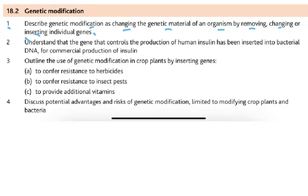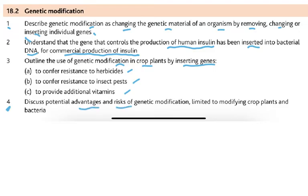Number two: understand that the gene that controls the production of human insulin has been inserted into bacterial DNA for commercial production of insulin. Then outline the uses of genetic modification in crop plants by inserting genes for resistance to herbicides, resistance to insect pests and to provide additional vitamins. The last point covers the potential advantages and risks of genetic modification, limited to modifying crop plants and bacteria.